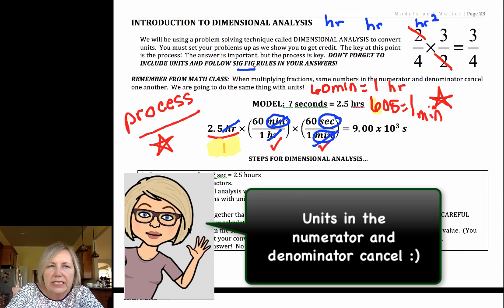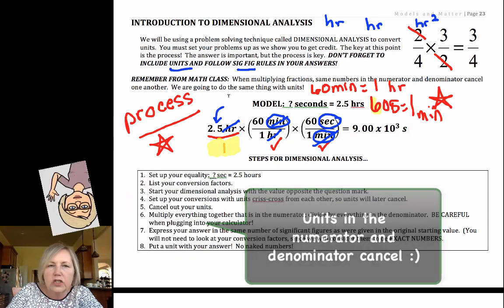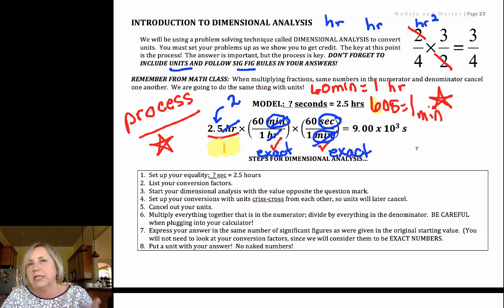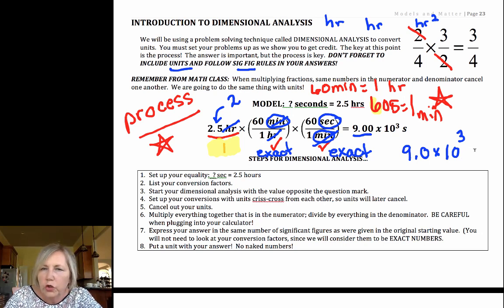And we always want to evaluate sig figs and units. And you notice this number in front has two sig figs. This is exact. We're going to consider all conversion factors for my purposes, plus in time, they are exact. And you notice that this answer is in three sig figs. So when you write your final answer, if you're one of my students, your teacher or professor would want you to round that to two significant figures. So it would be 9.0 times 10³ seconds.